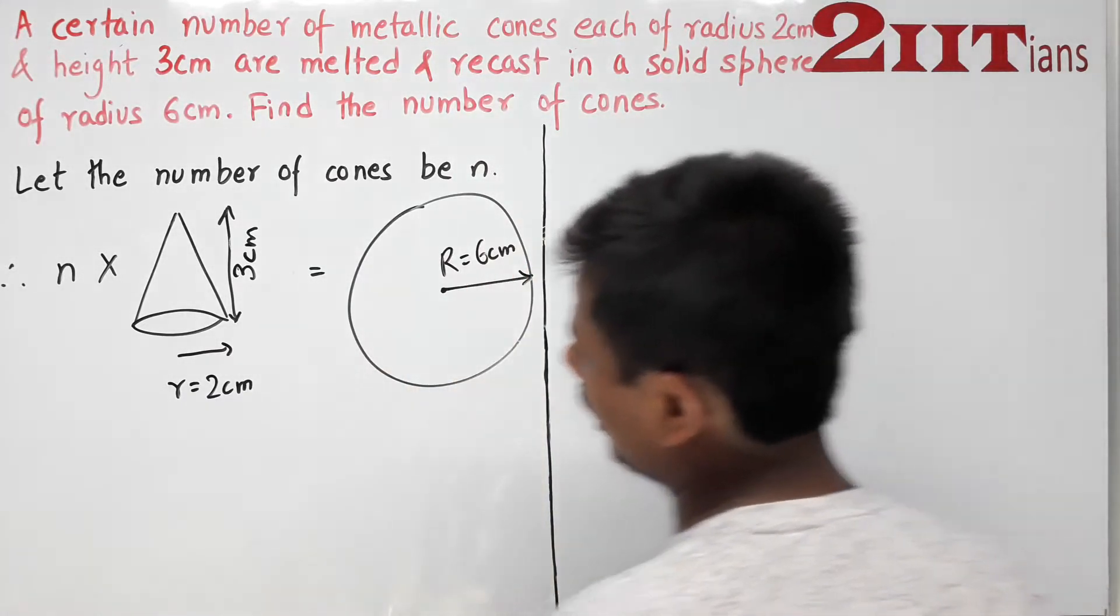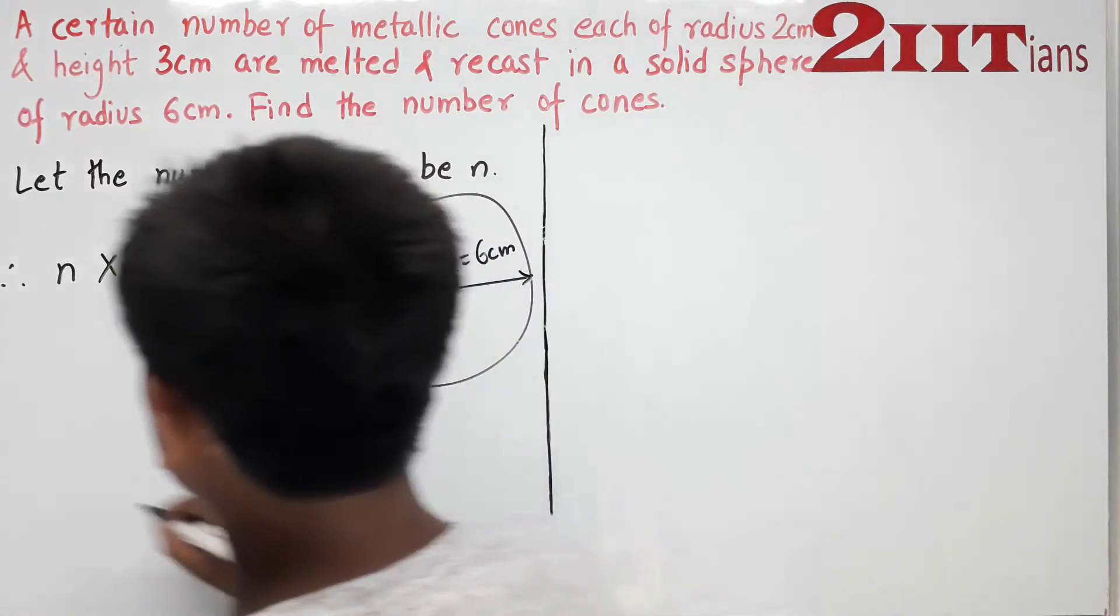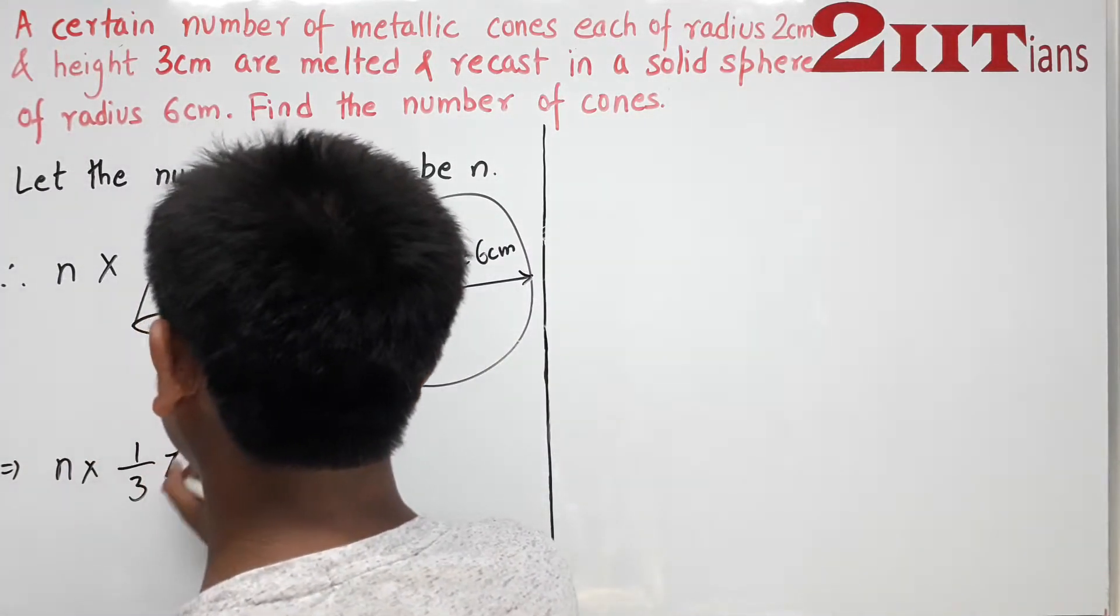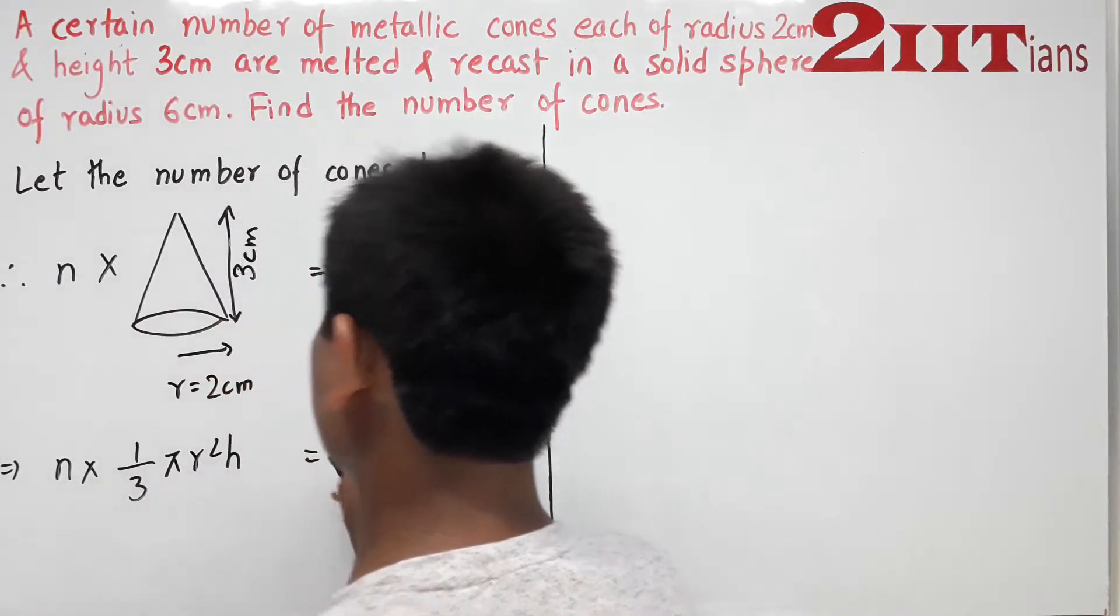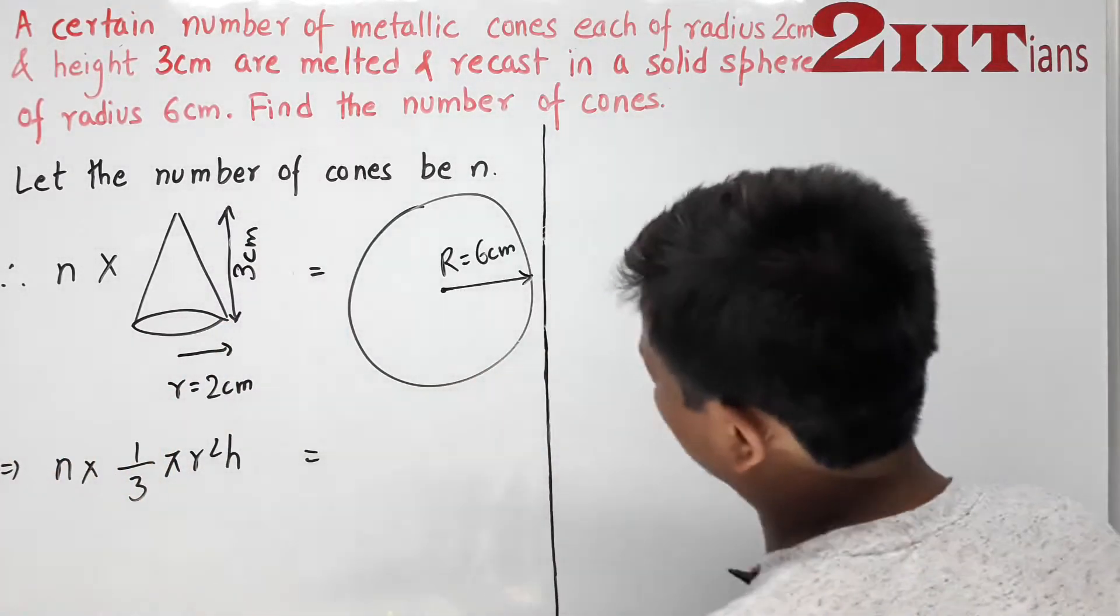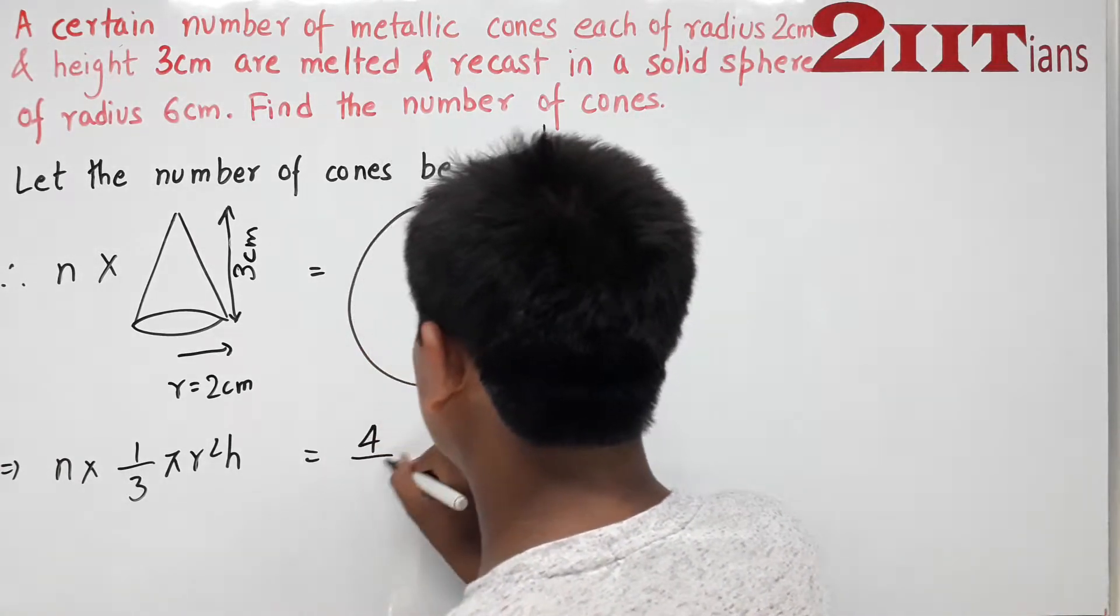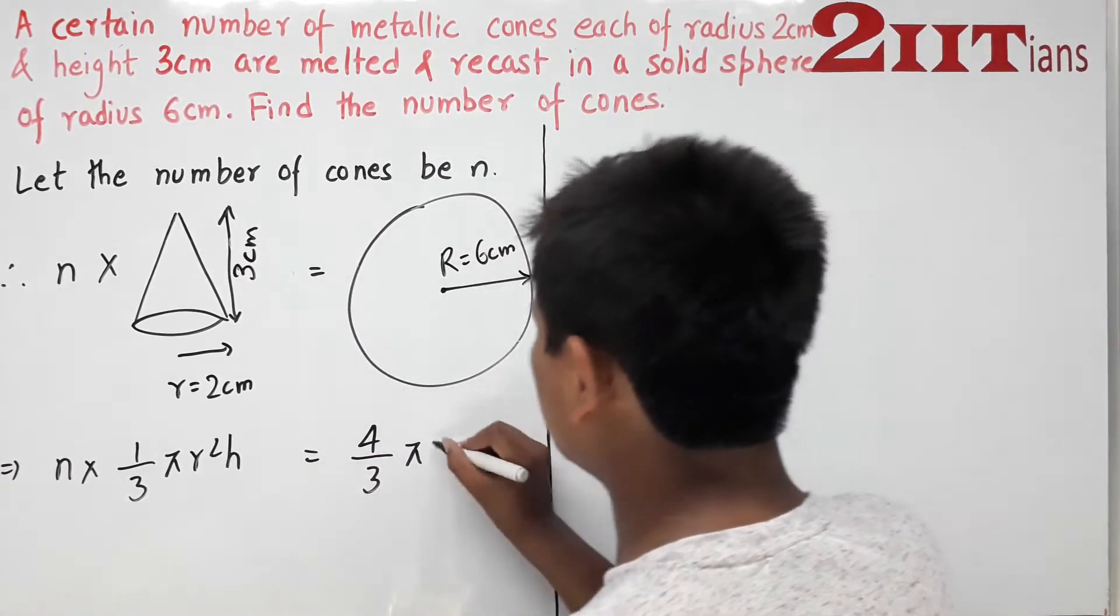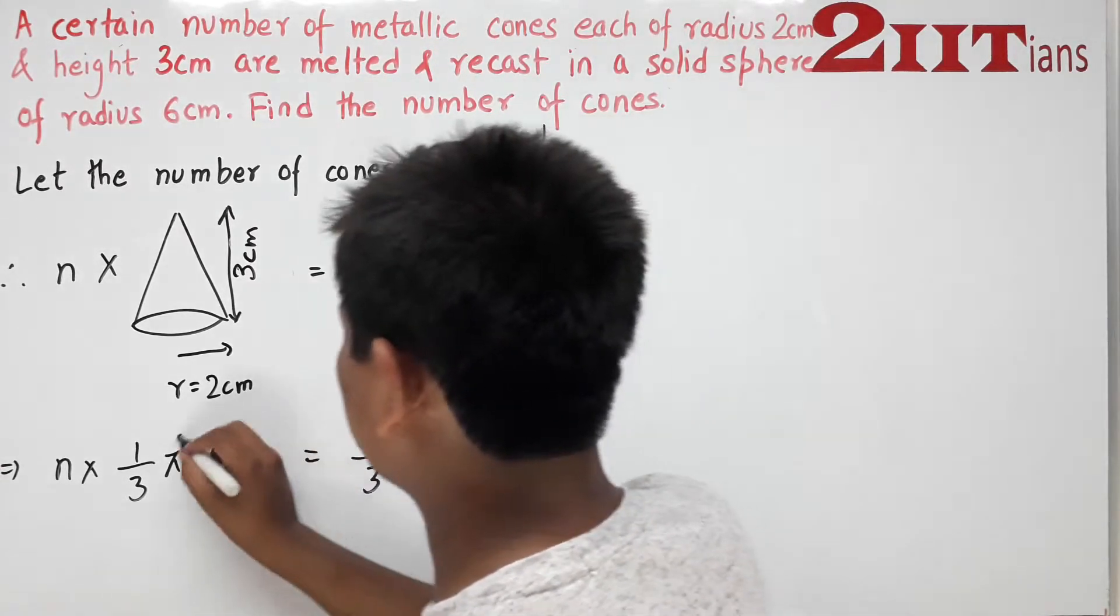You know the volume of cone is n multiplied by one-third π r² h. We'll do volume balancing as we've done in previous videos. Volume of sphere is four-thirds π R³. π cancels, and three cancels.